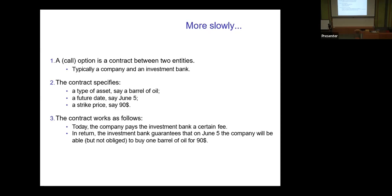This is where all the information comes together. In the future — June the 5th — I can buy a certain type of asset, the barrel of oil, for at most a pre-specified price of $90. You can think of it as a kind of insurance. Let's say in June I want to buy oil but I'm scared the price will go up. So I ask the bank: can you sell me an insurance so that on June the 5th I will pay at most $90? If oil goes up to $200, the bank covers the $110 difference. If the price is lower than $90, the bank pays nothing and I just buy it at the lower price.